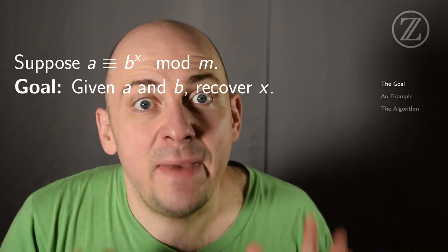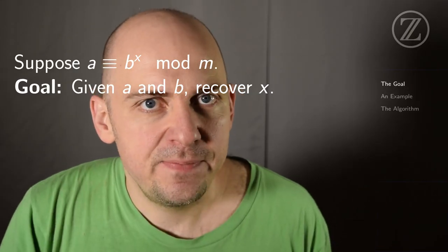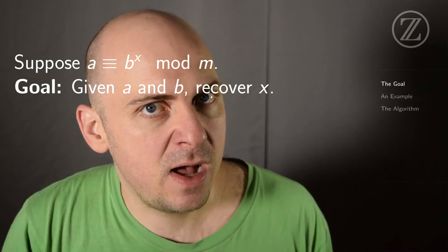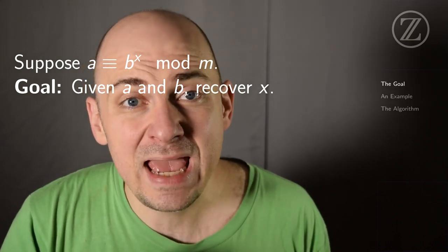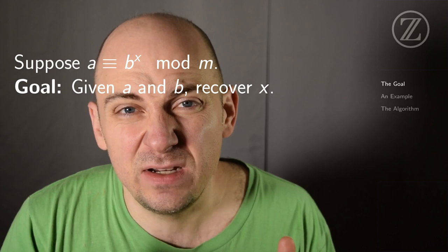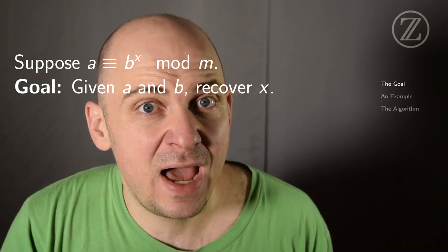Today, we want to solve the discrete log problem and do it quickly. So here's the setup. a is congruent to b to the x modulo m. And we're told what a and b are, but x is a secret. Our goal is to recover x.